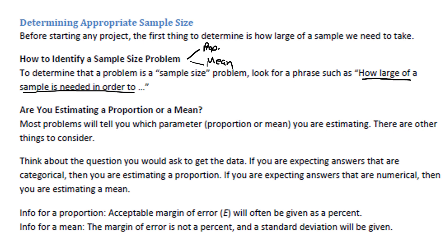In addition to that, for proportion problems, the acceptable margin of error E will often be given as a percent. When we're working with a mean, the margin of error is not a percent, and the standard deviation will be given. We need a standard deviation in order to estimate sample size for a mean. That will not be given for a proportion.